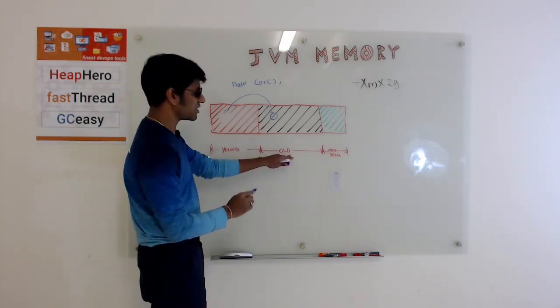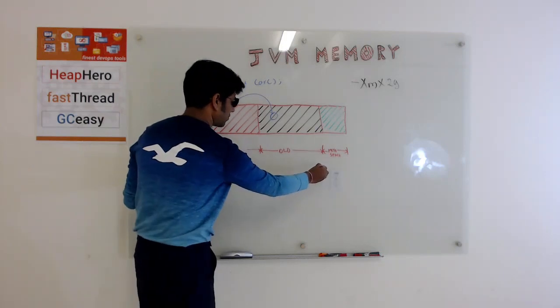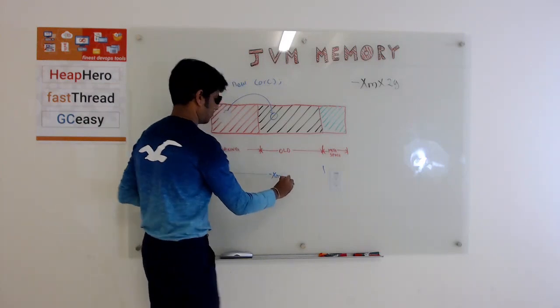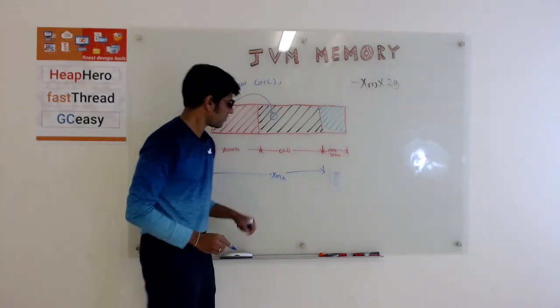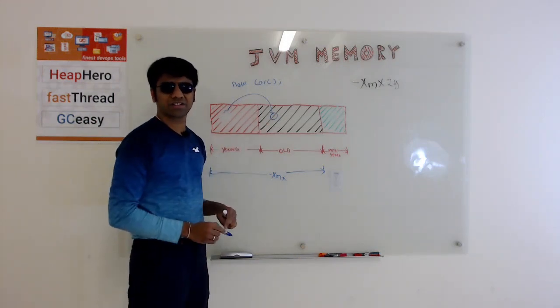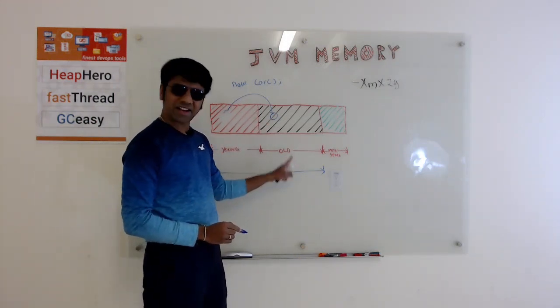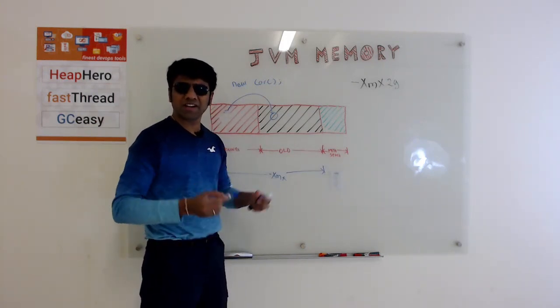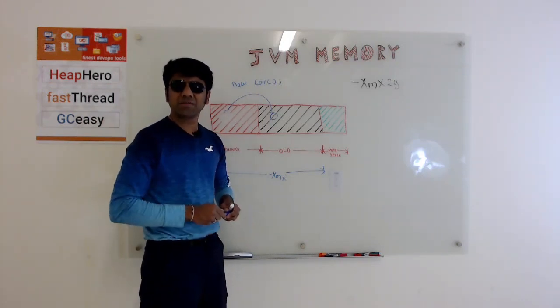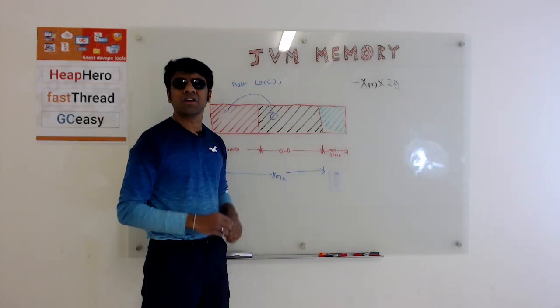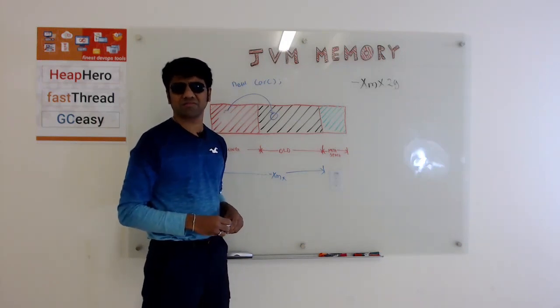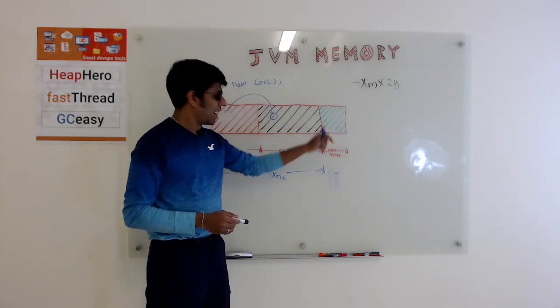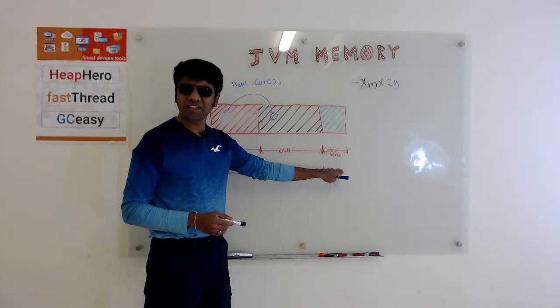So this is what XMX is. It's only defining young generation and old generation size. But after the young generation and old generation, there is also a metaspace. What is metaspace? Metaspace is the space where JVM stores the metadata information to run the application, like your class definitions, like your method definitions. All those things go into this metaspace, and this is defined by the property called metaspace or max metaspace.